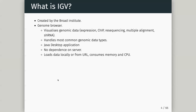IGV stands for Integrated Genome Viewer, developed by the Broad Institute. It's a genome browser that allows us to visualize genomic data - expression, re-sequencing, multiple alignment, shRNA - really any data which can be put on a linear genome. If we have a chromosome, a start, and an end, we can put it on the genome. What we can't visualize are unaligned sequences like FASTQ files, where we have no idea where they map.